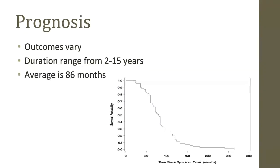FTD is a life-limiting illness and the progression is uncertain and varies greatly between individuals. The duration of disease is anywhere between two to 15 years. In our center data, the average is around 86 months, which is a little over seven years from symptom onset, or the time when you first notice symptoms.